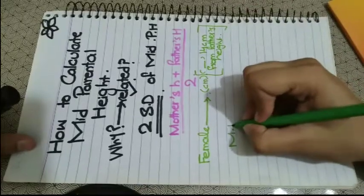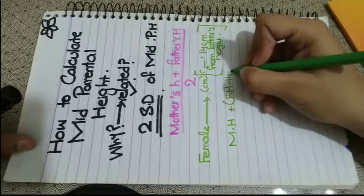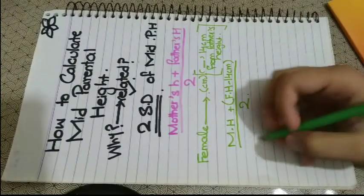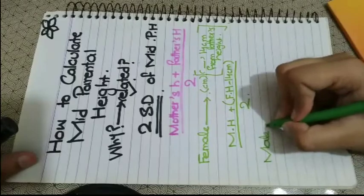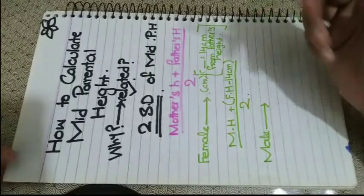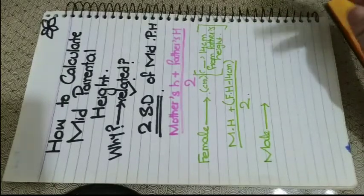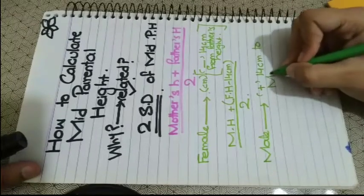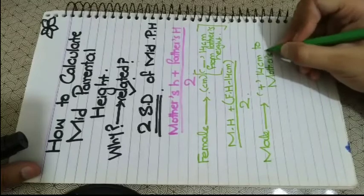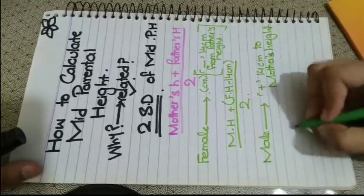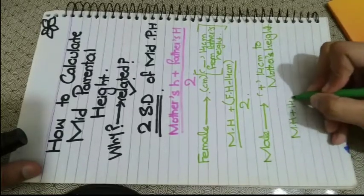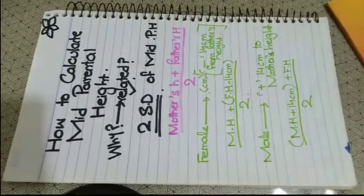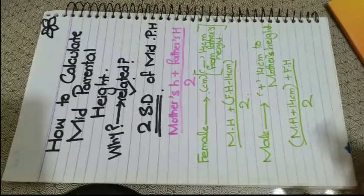For a female child, the formula is: mother's height plus father's height minus 14 centimeters (or 5 inches), divided by 2. For a male child, we add 14 centimeters to the mother's height (or 5 inches), so the formula becomes: mother's height plus 14 centimeters plus father's height, divided by 2.